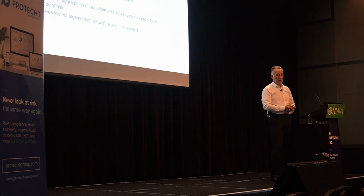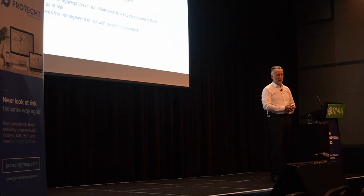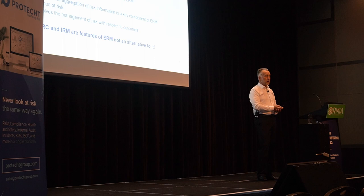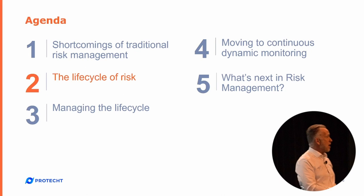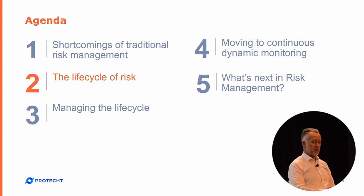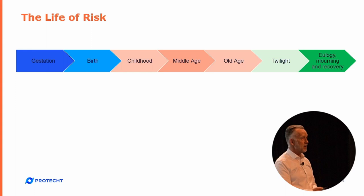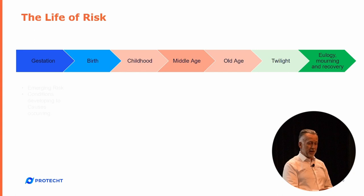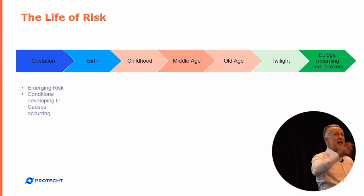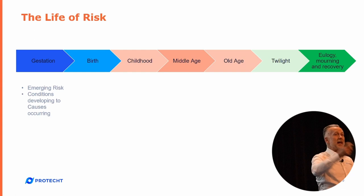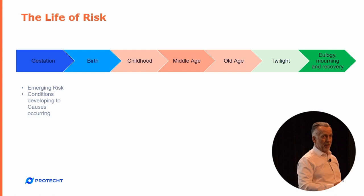The foundation for doing more dynamic, real-time, integrated risk reporting is to understand exactly what risk is. To do that, I want to look at the life cycle of risk. Number one: the gestation period — yes, I'm going to talk about animals. In that period, emerging risk is starting to happen. It hasn't hit us yet. Conditions are developing that might lead to a cause occurring. If we're thinking about weather risk, climate change could be one of those conditional changes, which could then lead all the way up to a cause being a weather-related event — cyclone, whatever.